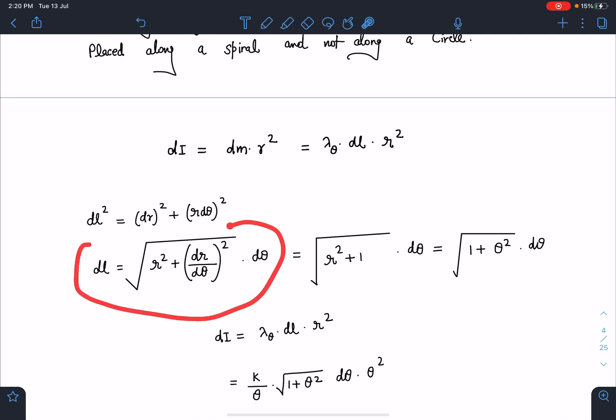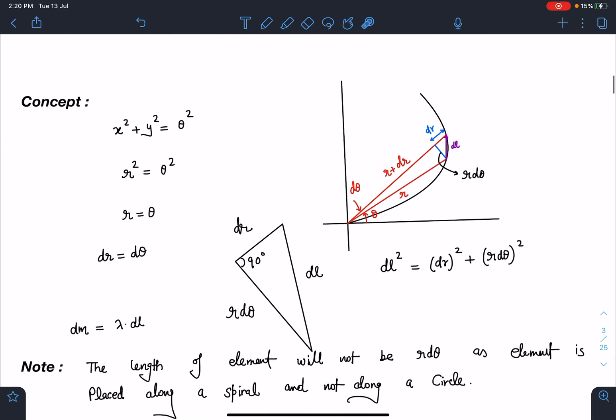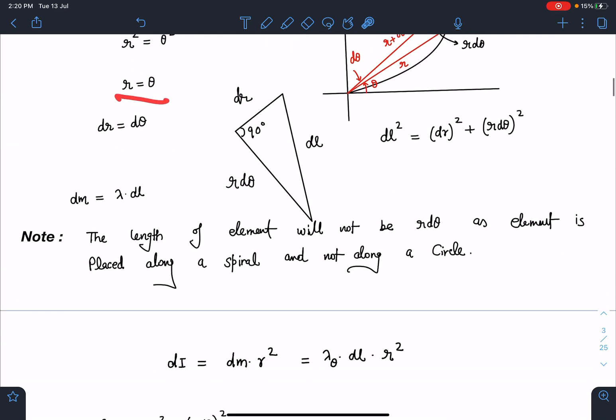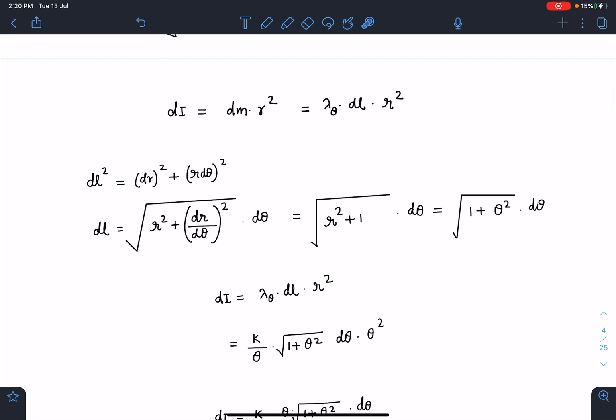dl is going to be √(r² + (dr/dθ)²) times dθ. It is something like dl² = dx² + dy² - it is exactly similar to that. So this will become √(r² + 1) times dθ because r = θ is our equation, so dr and dθ are equal. We are going to get dl value as √(1 + θ²)·dθ.